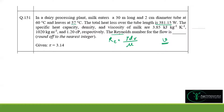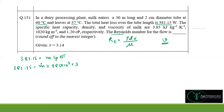The heat loss over the length of the tube is 381.15 W, which equals m-dot × Cp × ΔT. The specific heat capacity Cp is given as 3.85×10³ J/(kg·K) and ΔT = 60 - 57 = 3°C. Solving for the mass flow rate gives m-dot = 0.033 kg/s.